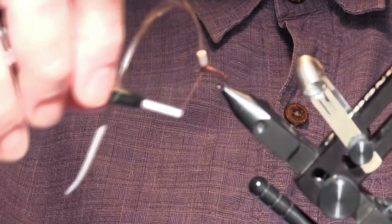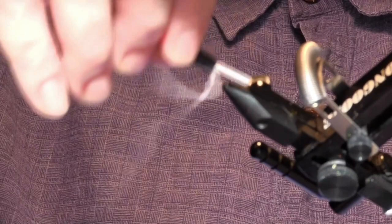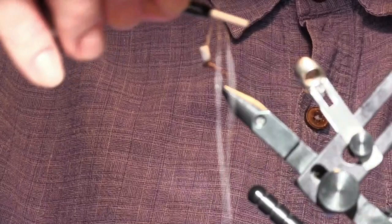The first wrap of the hackle's gonna go at the top and then I'm gonna work that thread back down that post to keep that base even. Again, that base is critical. Then I'm gonna bring that thread back to the back of the thorax towards the hook bend.